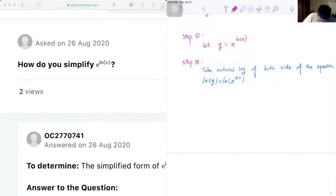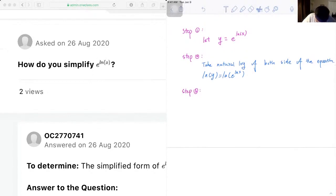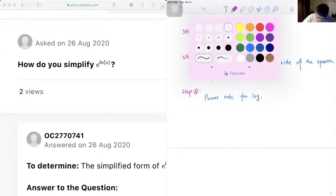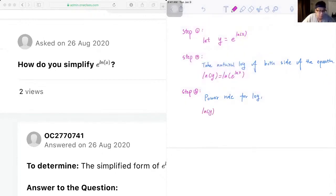And then step three. And then we apply the power rule. So power rule for logarithm. We will have log y is equal to log x times log e.